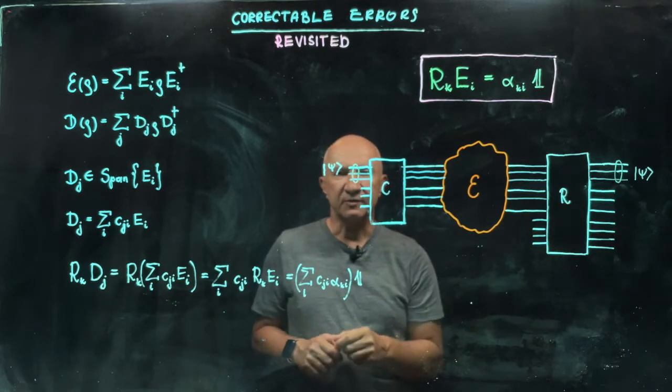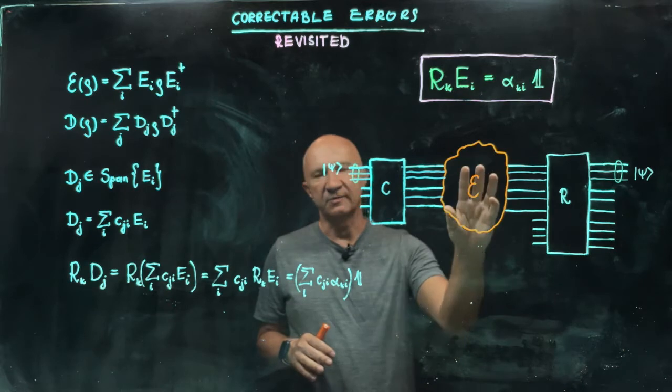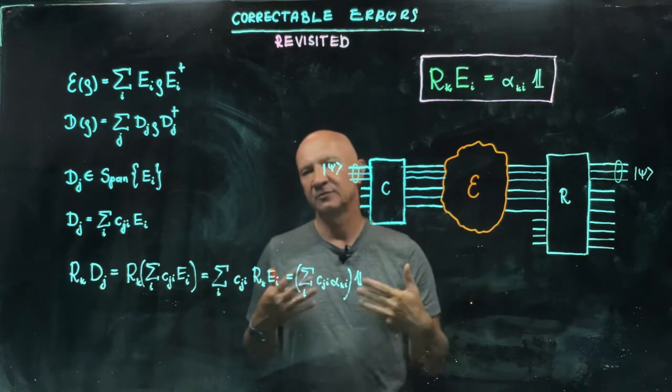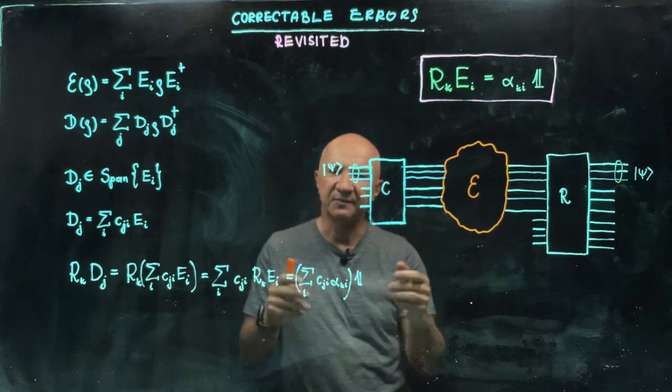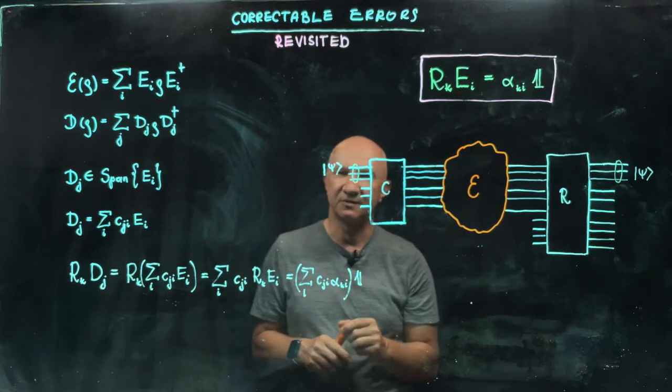It is actually a quite important question, right? Because usually this map E is induced by the environment and we do not know exactly what the environment is doing. Of course, we have some idea, but we are never completely sure.